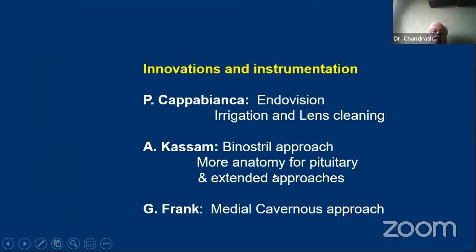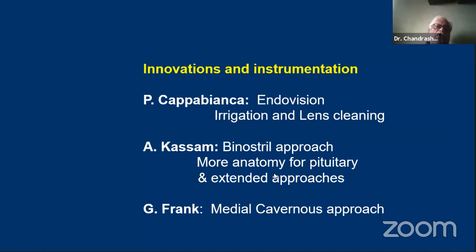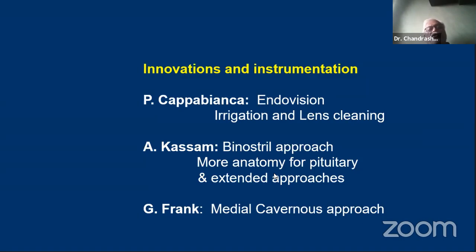Over time, Cappabianca brought the endovision irrigation and lens-cleaning system. Kassam advocated the bi-nostril approach and we were quite influenced by his approach to begin with, because it made it much easier for a neurosurgeon to have suction in one hand and an instrument in the other. This bimanual surgery is what we learned in microsurgery; it not only gives good manipulation but a good sense of depth — both hands usually working in tandem. Once we shifted to the bi-nostril approach around 2006 or 2007, we have stayed with the bi-nostril approach since then for more than 700 cases.